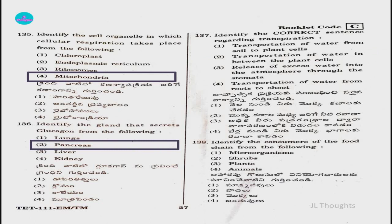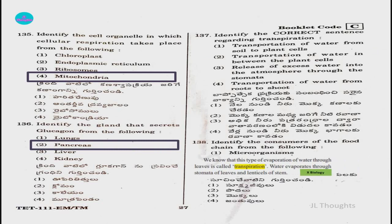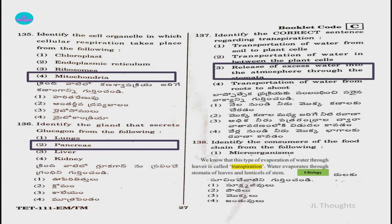Question number 137: Identify the correct sentence regarding transpiration. Options include transportation of water from soil to plant cells, between plant cells, release of excess water into the atmosphere through stomata, and transportation from roots to shoots. In class 10 biology, transpiration is defined as evaporation of water through stomata of leaves and lenticels of stem. So the answer is option three: release of excess water into the atmosphere through the stomata.